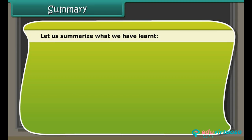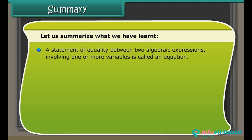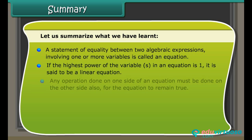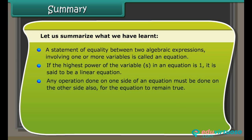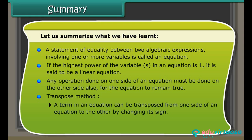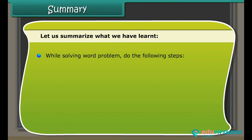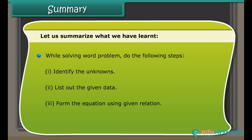Summary: A statement of equality between two algebraic expressions involving one or more variables is called an equation. If the highest power of the variables is 1, it is a linear equation. Any operation done on one side must be done on the other side too. In the transpose method, a term changes sign when moved across the equals sign, and a multiplier becomes a divisor and vice versa. When solving word problems: 1) Identify the unknowns, 2) List the given data, 3) Form the equation, 4) Solve for the unknown.